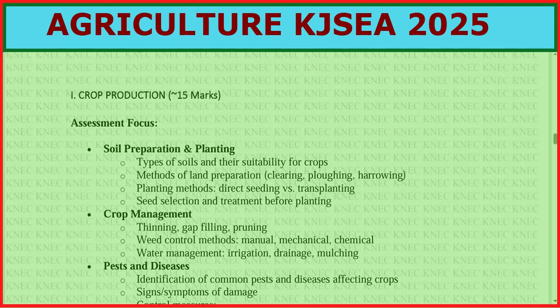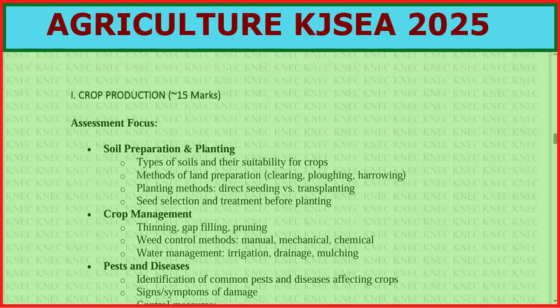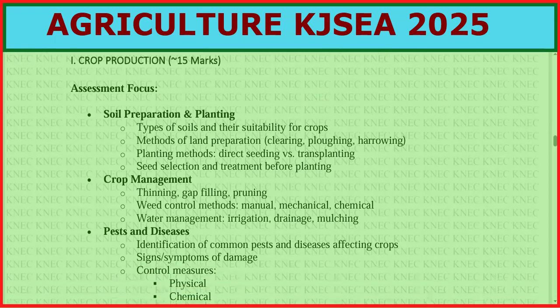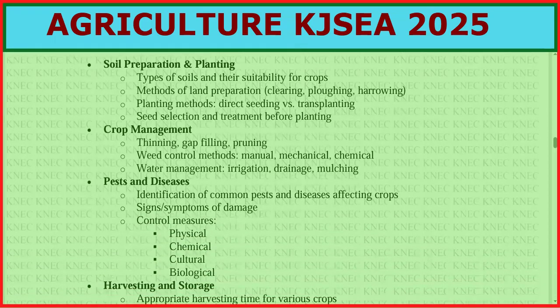Under crop management, look at thinning — which you did in Grade 5 — gap filling, pruning, and so on. Also revise weed control methods: manual, mechanical, and chemical. For water management, cover irrigation, drainage, and mulching.